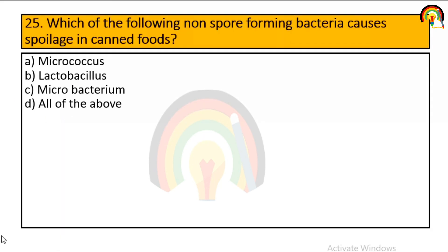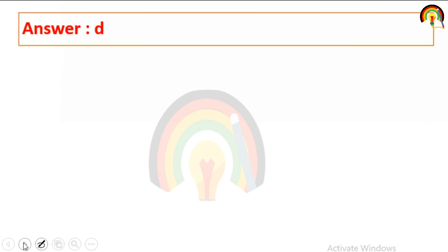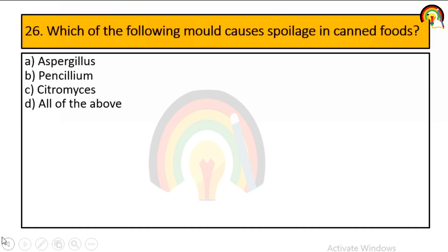Which of the following non-spore-forming bacteria cause spoilage in canned food? Micrococcus, Lactobacillus, Microbacterium, or all of the above? It is all of the above. Which of the following molds cause spoilage in canned food? Aspergillus, Penicillium, Citromyces, or all of the above? It is all of the above.